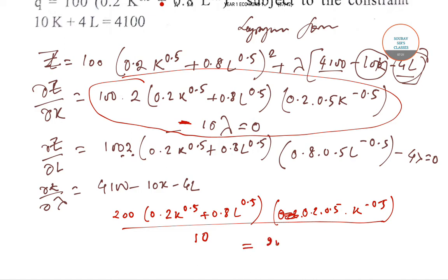Equals 200(0.2K^0.5 + 0.8L^0.5)(0.4)L^(-0.5) divided by 4. These two parts cancel out and you get a formation directly with respect to K and L.